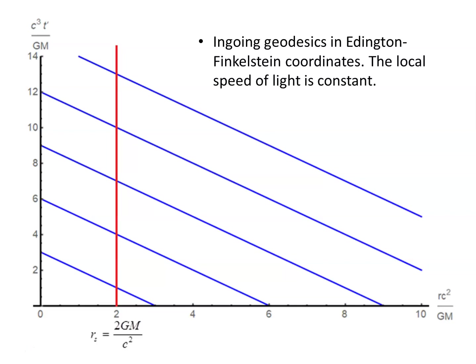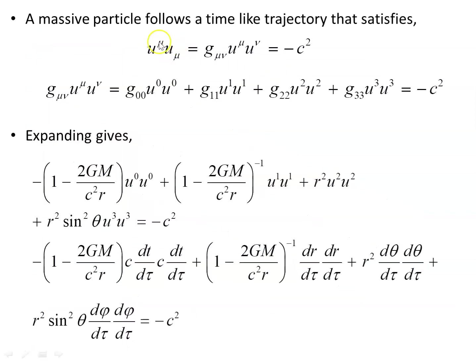For a mass following a timelike path, we use the four-velocity. The magnitude squared of the four-velocity — which is tangent to the geodesic — can be represented using the metric and the two contravariant components, and it equals the constant −c² using the metric signature used here. This agrees with the fact that geodesics parallel transport their own tangent vector, holding both magnitude and direction constant along the path.